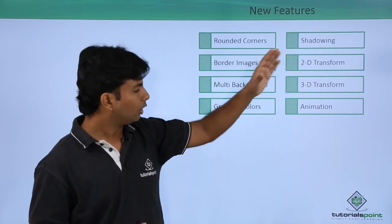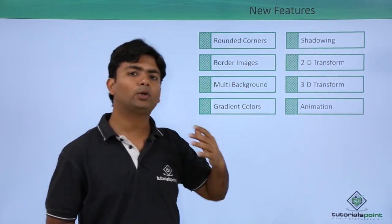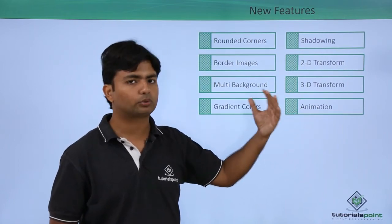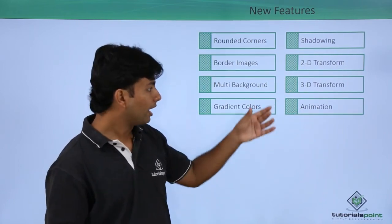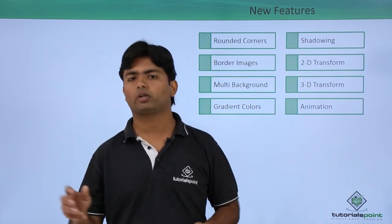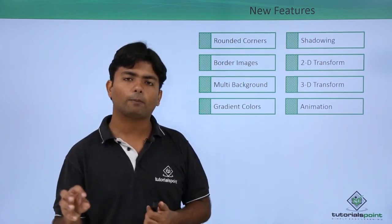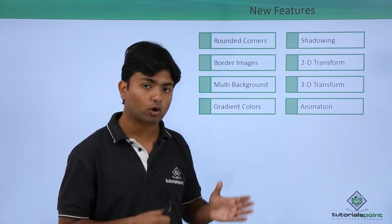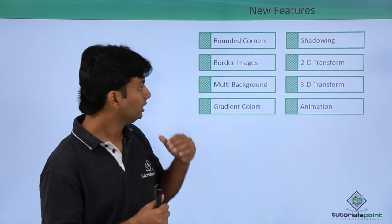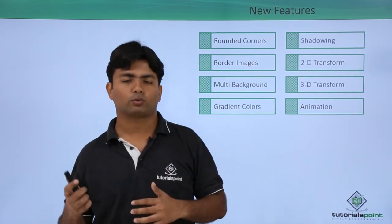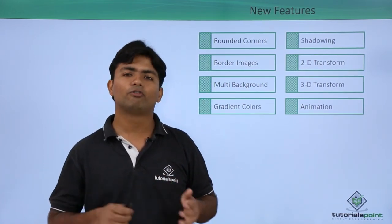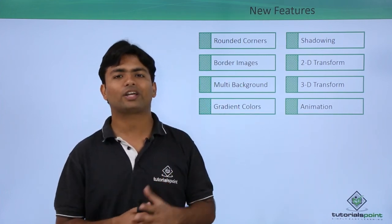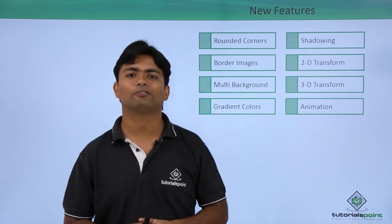Shadowing is where you can take any particular element like an image, text, or heading and make a shadow out of it. Along with that, we will see how to do 2D and 3D transformations using CSS3, and animations where you can move objects as per your requirement to create animation effects. In the coming videos we are going to discuss these topics one by one — that is all for the introduction of CSS3.